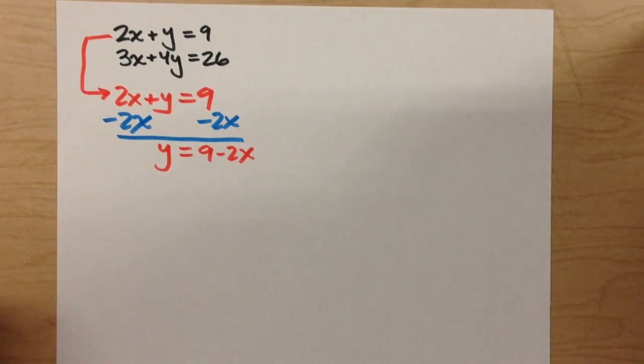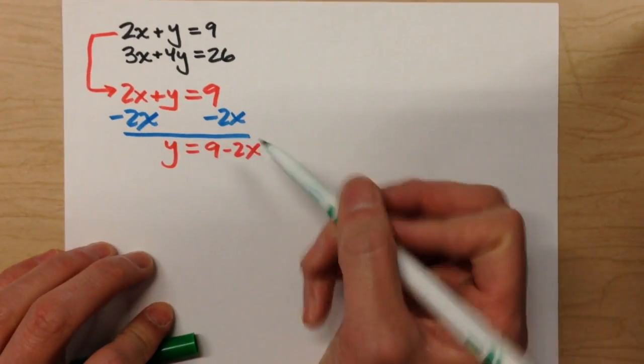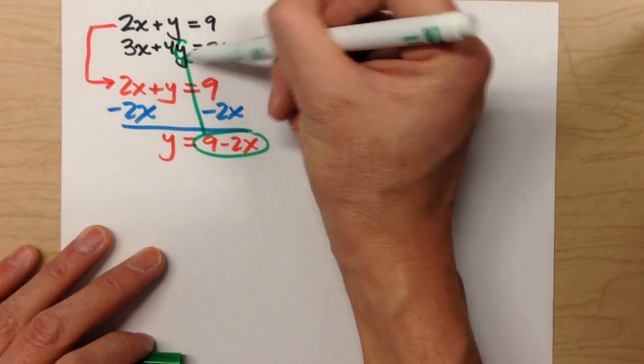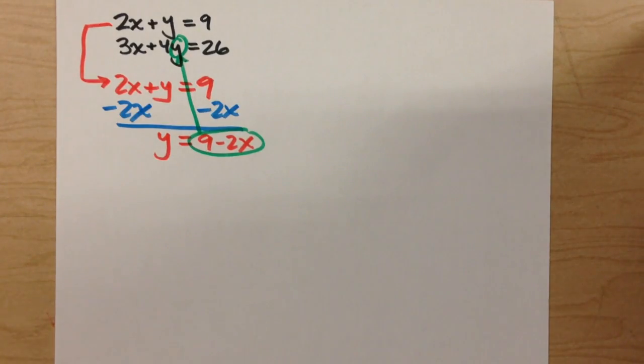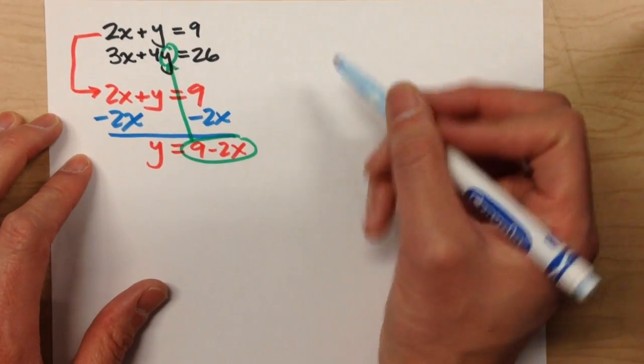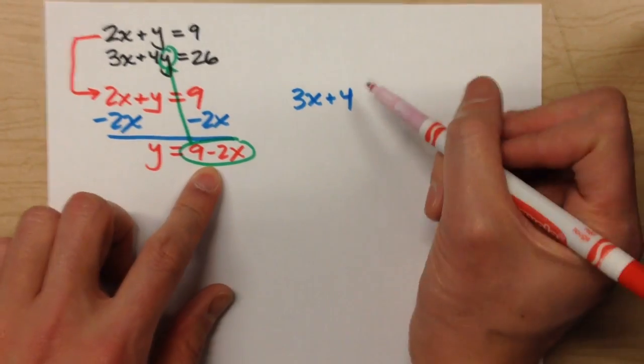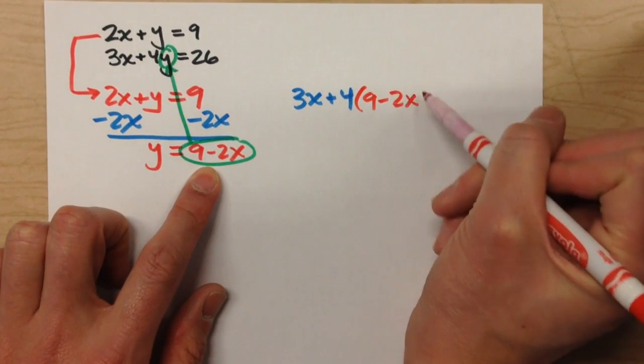So let's go ahead and finish solving this. I'm going to take all this stuff that y equals and substitute it into the second equation for y. So instead of 3x plus 4y, I'm going to have 3x plus 4 times all that stuff, 9 minus 2x.